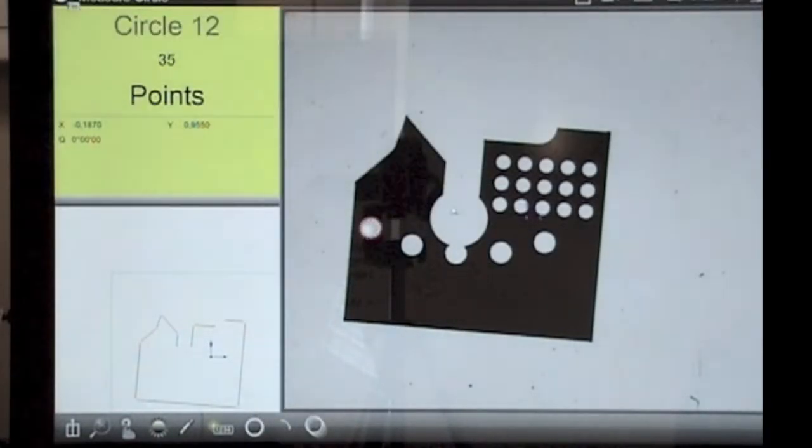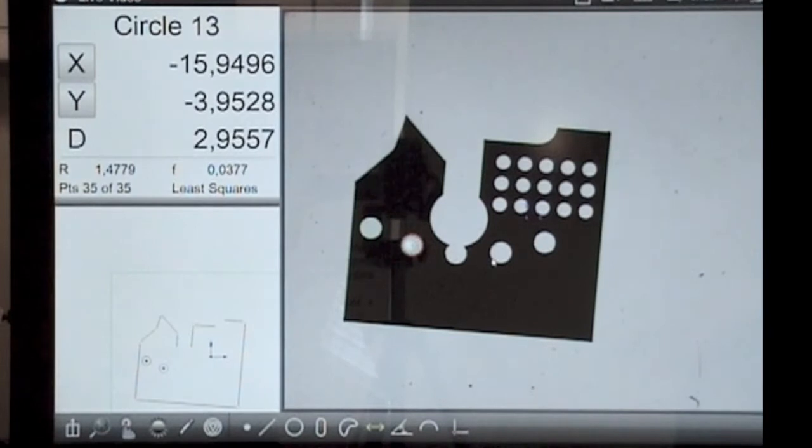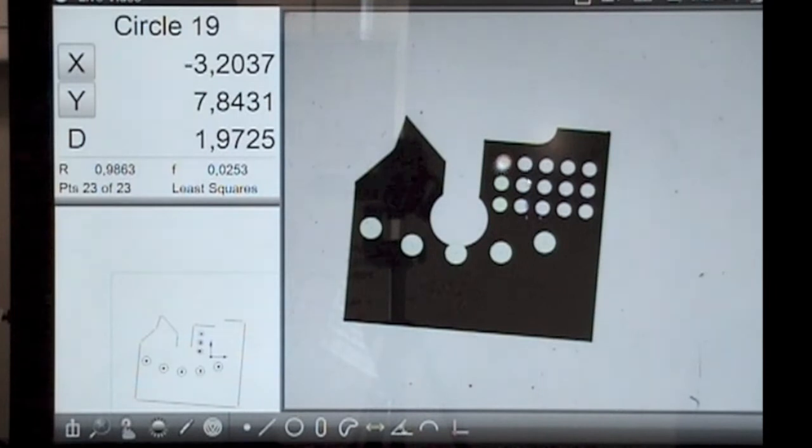Now we can select the circle icon. Using the same method to identify circles and curves, again the software identifies the boundary and fits the least squares circle or arc to those points.